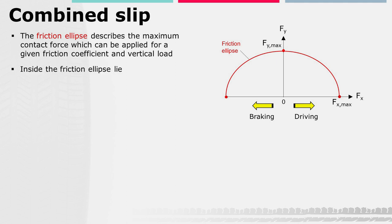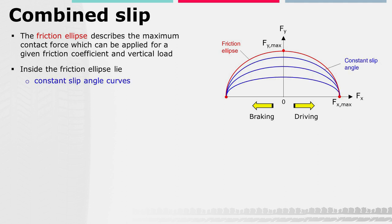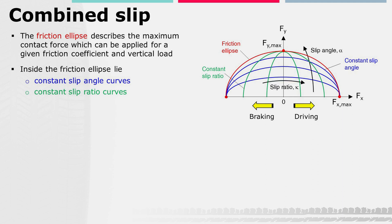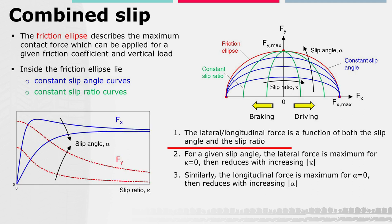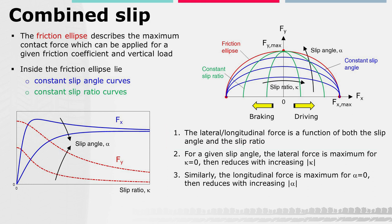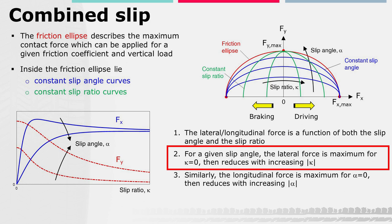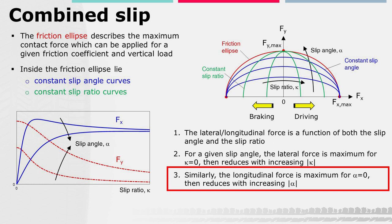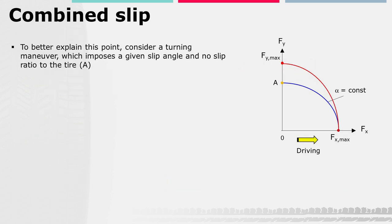The friction ellipse describes the maximum contact force which can be developed for a given friction coefficient and vertical load. Smaller ellipses can be described inside the friction ellipse. The blue ellipse represents the global contact force at a given slip angle for varying slip ratio; the green ellipse represents the global contact force at a given slip ratio for varying slip angle. The friction ellipse diagram highlights that: for a given slip angle, the lateral force is maximum at zero slip ratio, then reduces with increasing slip ratio; and similarly, the longitudinal force is maximum at zero slip angle, then reduces with increasing slip angle.